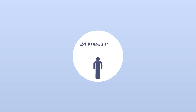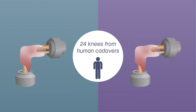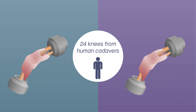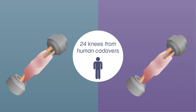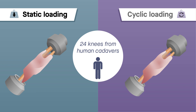Researchers reached those conclusions by testing 24 knees from human cadavers. A 6-degree-of-freedom robotic system was used to place the knees in hyperextension through one of two methods: static loading or cyclic loading.